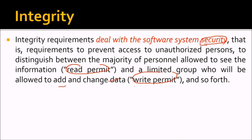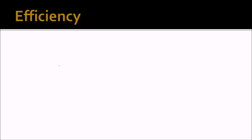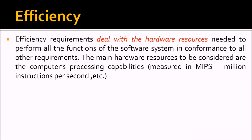Authentication and authorization determine which users are allowed access and which are not. Efficiency requirements deal with the hardware resources needed to perform all functions of the software system in conformance with all other requirements. The main hardware resource considered is the computer's processing capability, measured in MIPS — million instructions per second.